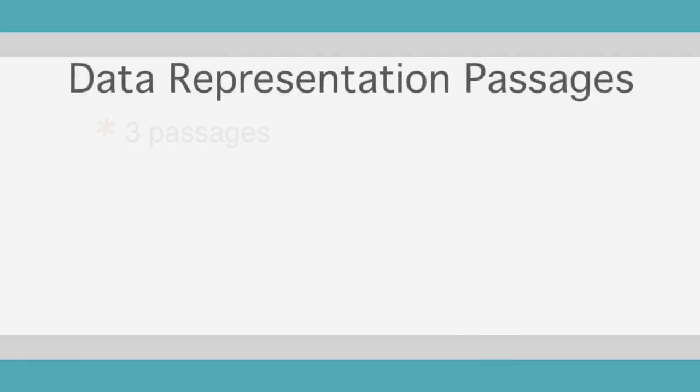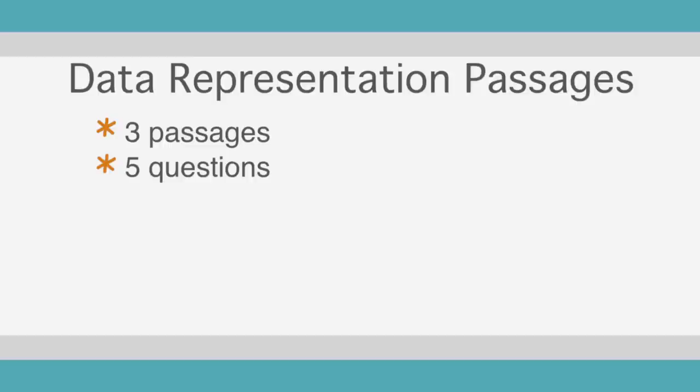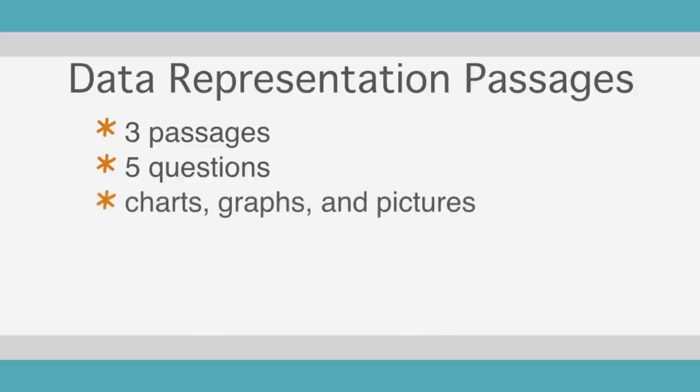Let's discuss the data representation passages of the ACT science section. There are typically three of these passages with five questions each. These passages are generally the most straightforward of the science passages. You will find mostly charts, graphs, and pictures, and less reading.